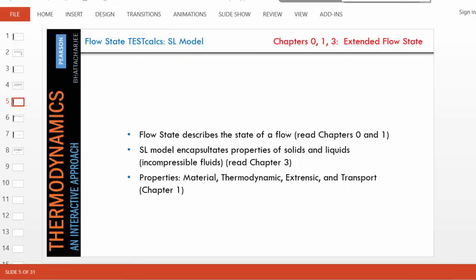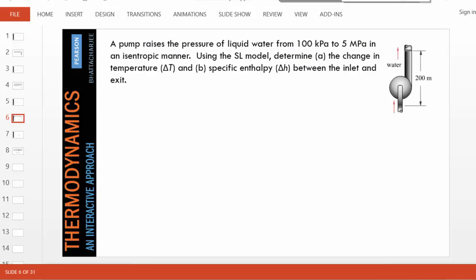The problem is very simple. We have a pump which is raising water from state 1 to state 2, 200 meters above. The initial or inlet states are given at 100 kPa and the exit state 5 MPa in an isentropic manner. In other words, S2 equals S1. We are asked to find change in temperature and change in specific enthalpy. And maybe as an addendum, we'll find the change in specific flow energy so that we can distinguish between these two variables.